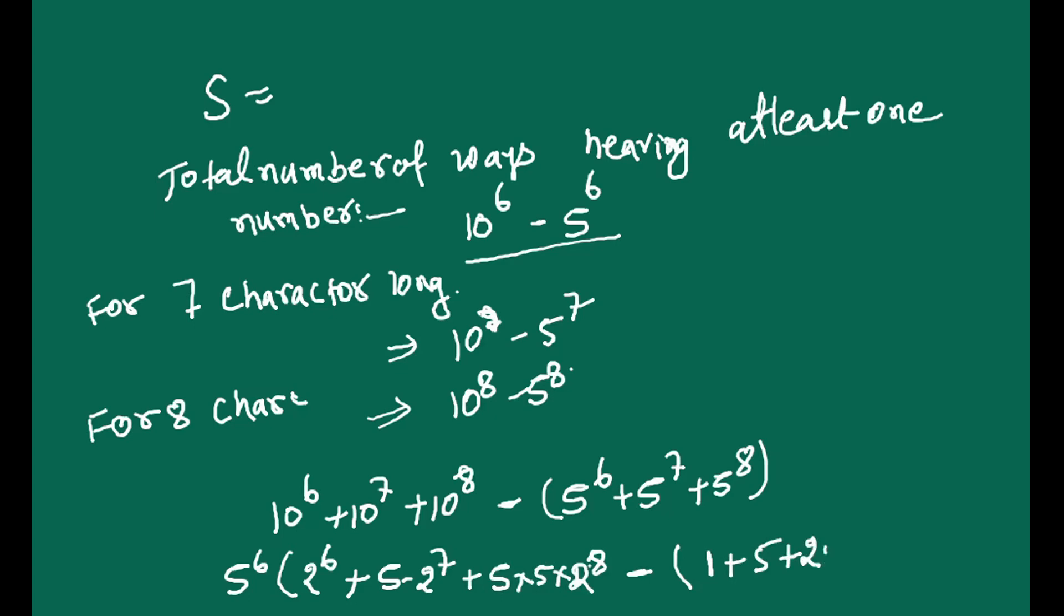So when we solve this, five to power six is to two to power six. Two to power six that means 64. Two to power six, 64 plus two to power seven becomes 128, or multiply by five, so 640 plus when you solve this you will get 6400.